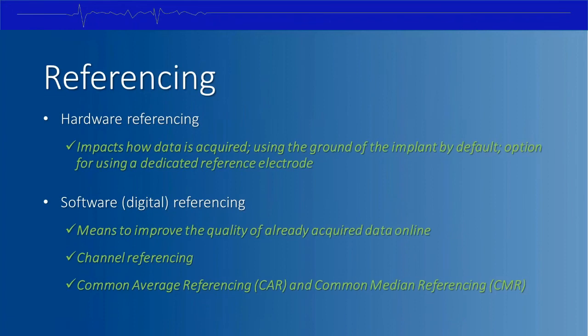To recap referencing: hardware referencing affects data acquisition before A/D conversion; the user can set a dedicated reference electrode, otherwise the implant ground is used by default. Software/digital referencing improves already-acquired data online. Channel referencing is most useful when one channel has noise common to others but no common signal of interest. Common average or median referencing is most useful when all channels share a common noise and common signal of interest. CAR and CMR work best with many channels.